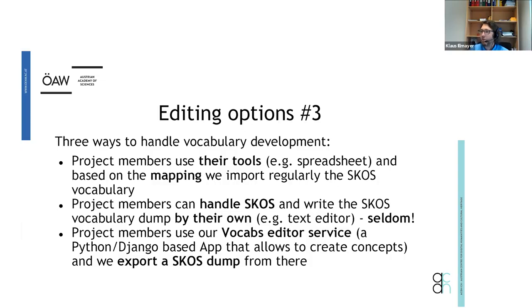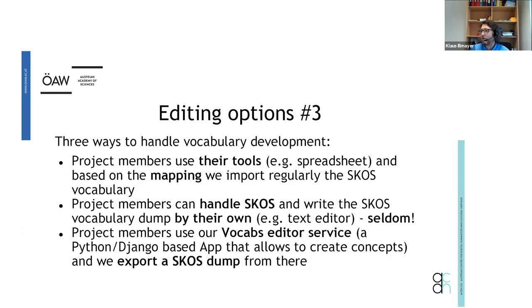In general we have three ways vocabulary development is handled: first, project members use their own tools — spreadsheets are very common — and we do the mapping and import via scripts to create a SKOS dump and put it into the triple store. Second, very seldom, project members can create SKOS themselves using a text editor and hand over the dump to us. Third — the most requested option — is having a dedicated editor, which led us to develop our in-house VocABS Editor service.